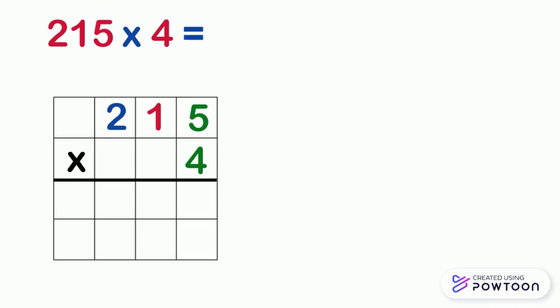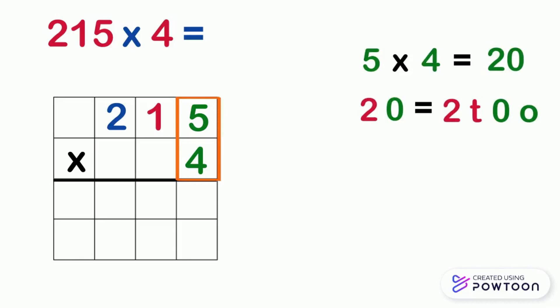As we learned, we start with the 1's. We have 5 times 4. 5 times 4 equals 20. The number 20 is made up of 2 tens and 0 ones. So we will write 0 in the 1's place of the answer box, but 2 will be carried up to the top of the 10's place column.